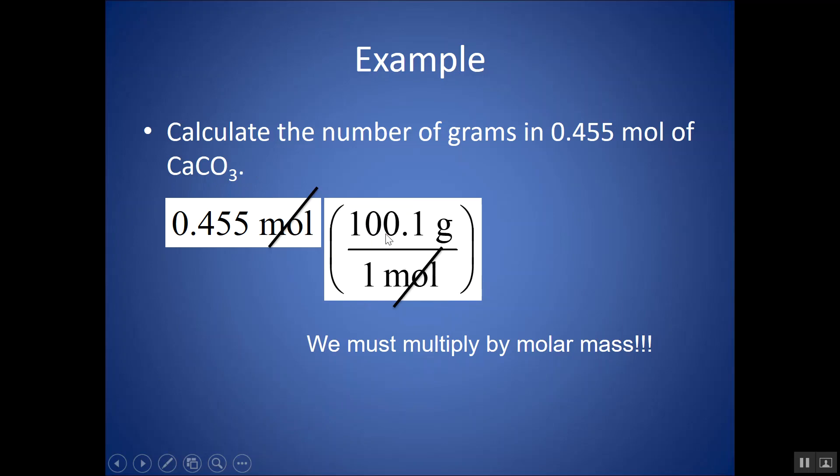I want the one mole on the bottom. I want 100.1 grams on top. This is just my molar mass. For this molecule, there's 100.1 grams for every one mole. Moles cancel out and all I'm doing is doing that 0.455 times 100.1 and I get about 45.5 grams. When you're doing this, if you want to think about sig figs, it might be helpful. If I have three significant figures to start with, make sure your answer is around three sig figs.